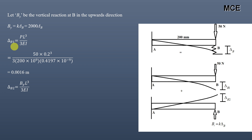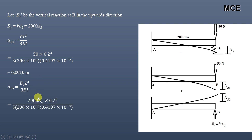In the second case, only the vertical reaction B_y is applied upward at end B. Again using the cantilever deflection formula: delta_b2 = B_y × L³ / (3EI). Substituting B_y = 2000 × delta_b, L = 0.2 m, and the same E and I values gives delta_b2 = 0.064 × delta_b.